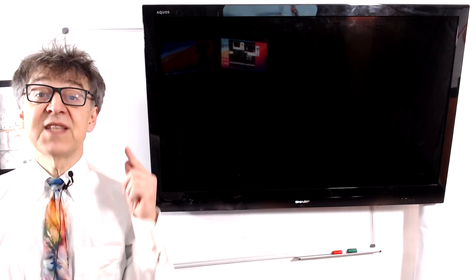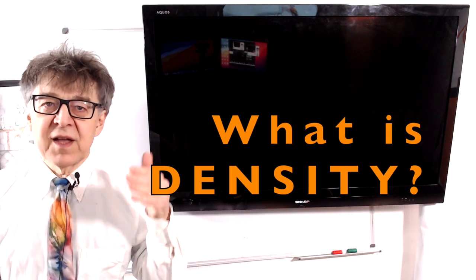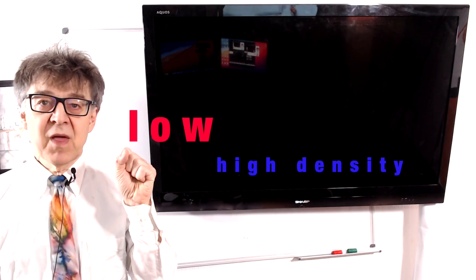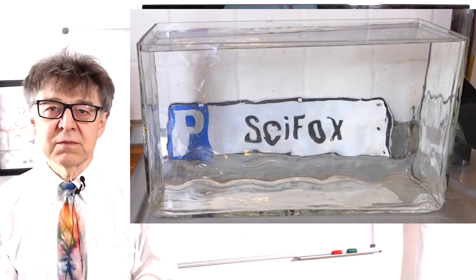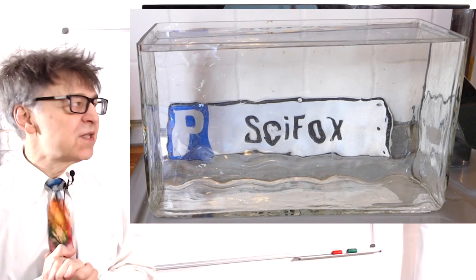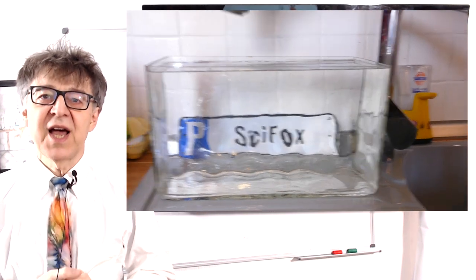If you want to understand the lava lamp, we have to deal with density. Density is what determines whether an object will sink or swim. This is a container with water, an aquarium. Grey will now put two soda cans into this water, regular soda and sugar-free soda.